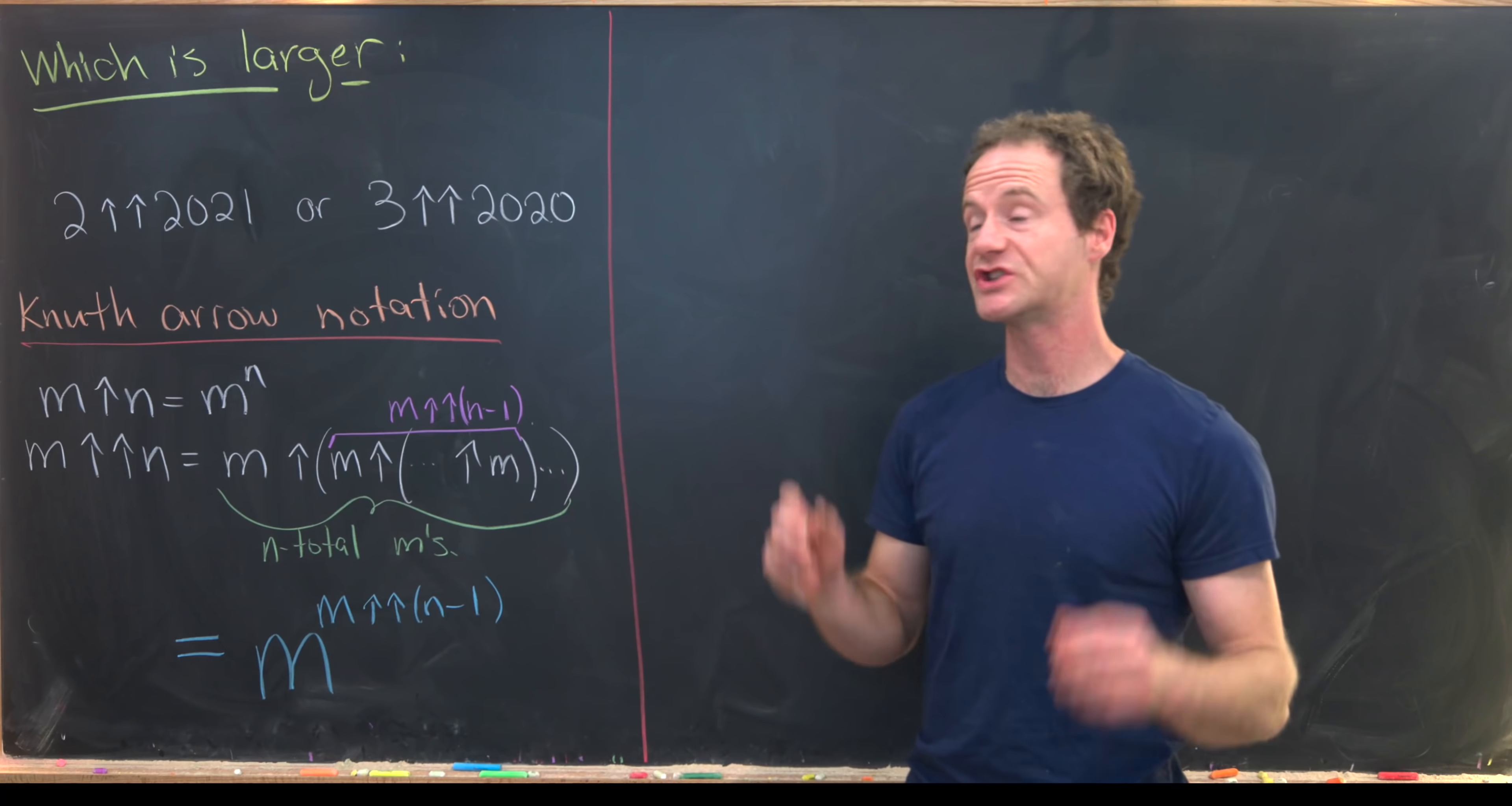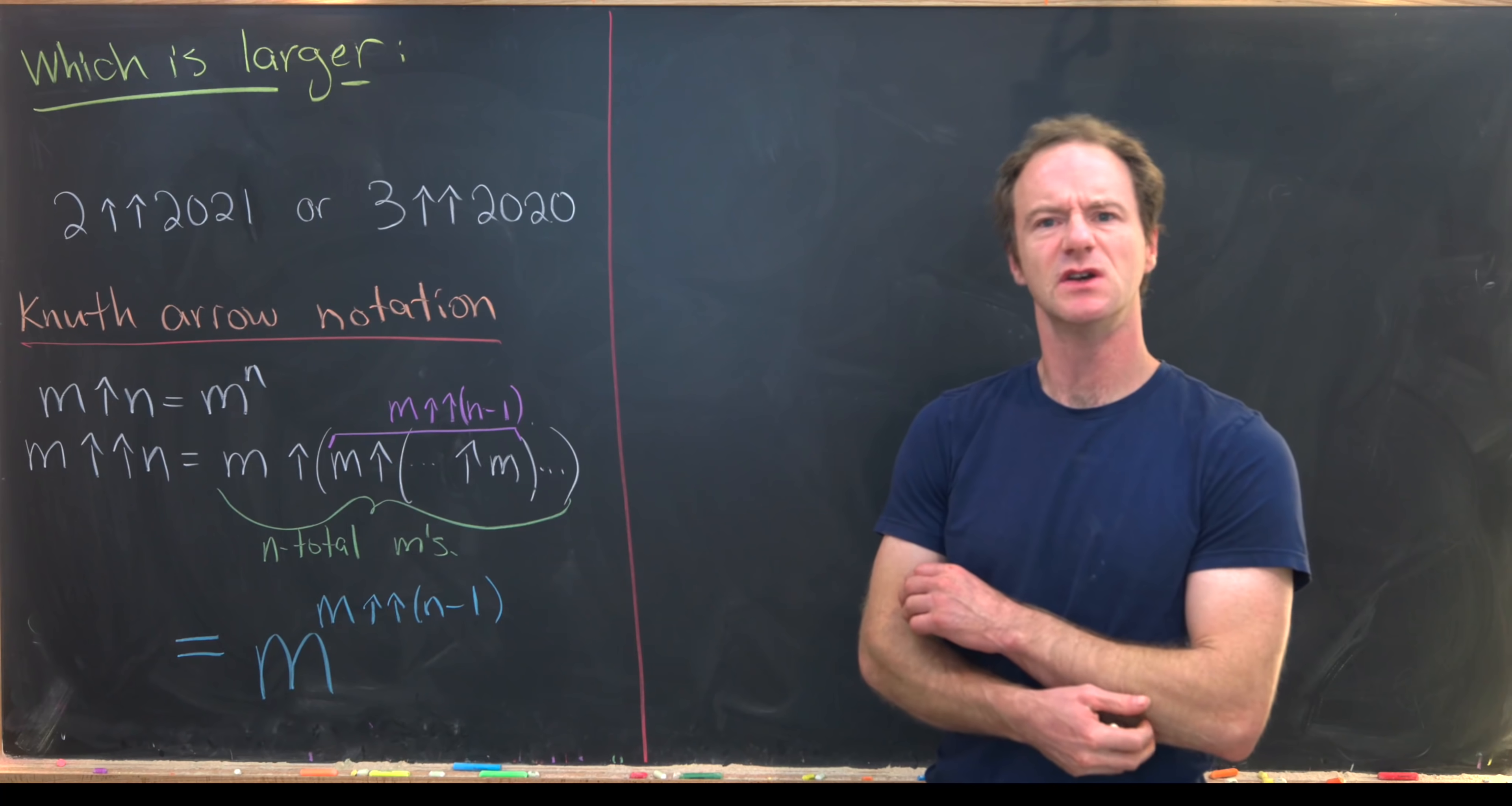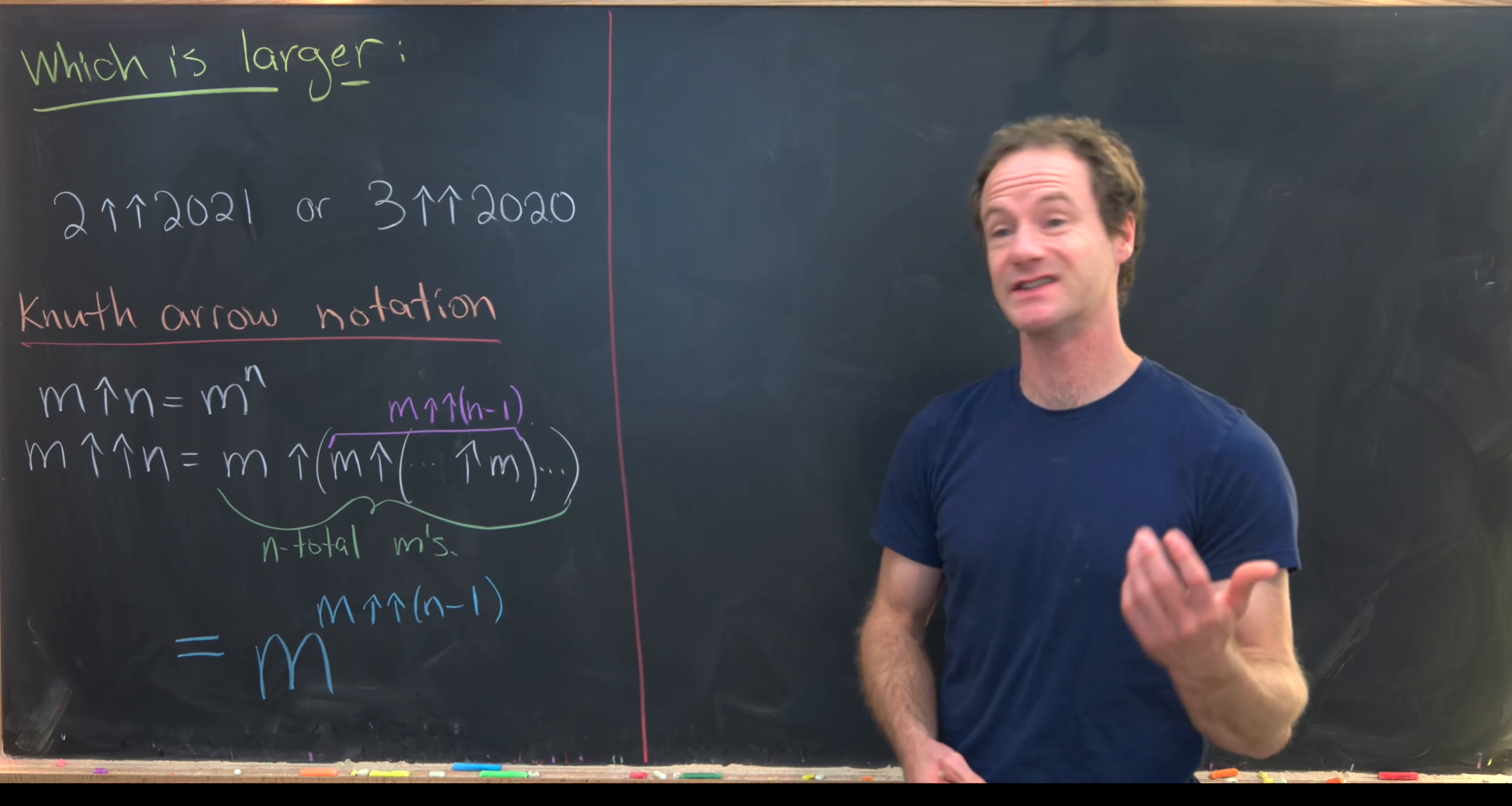Here I've got a nice which is larger problem involving the Knuth arrow notation. So let's recall what that notation is first.